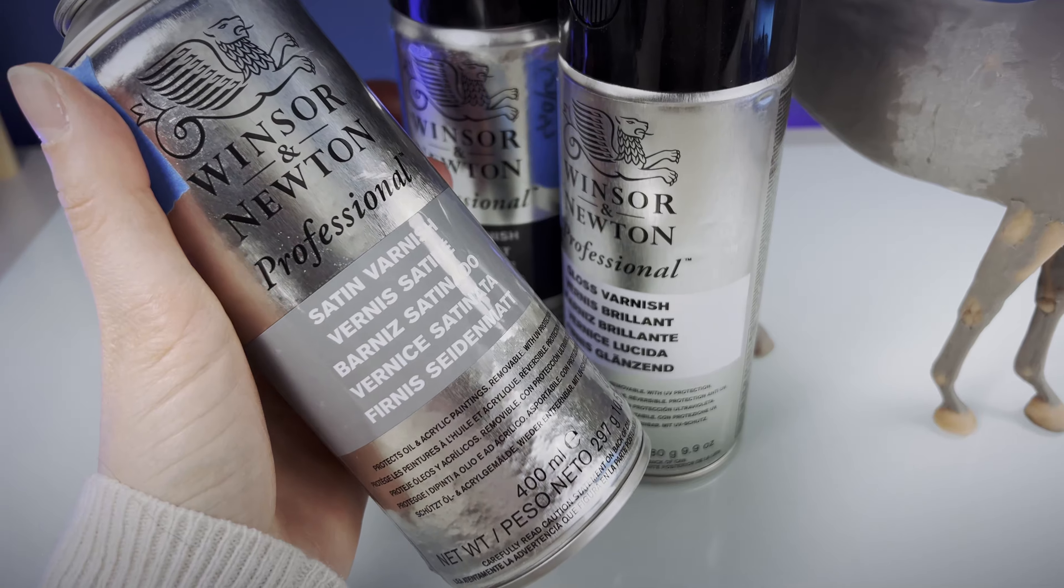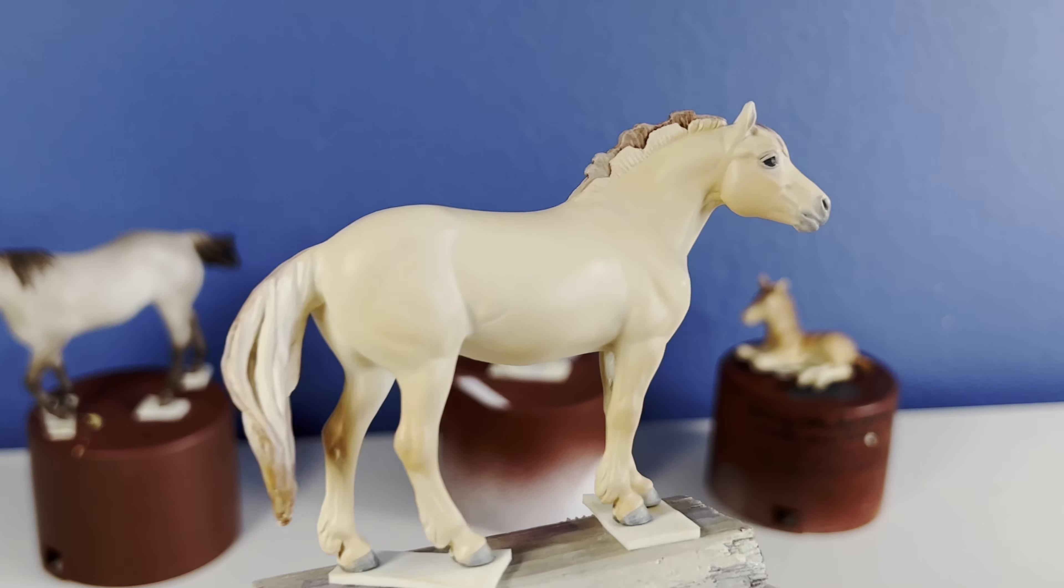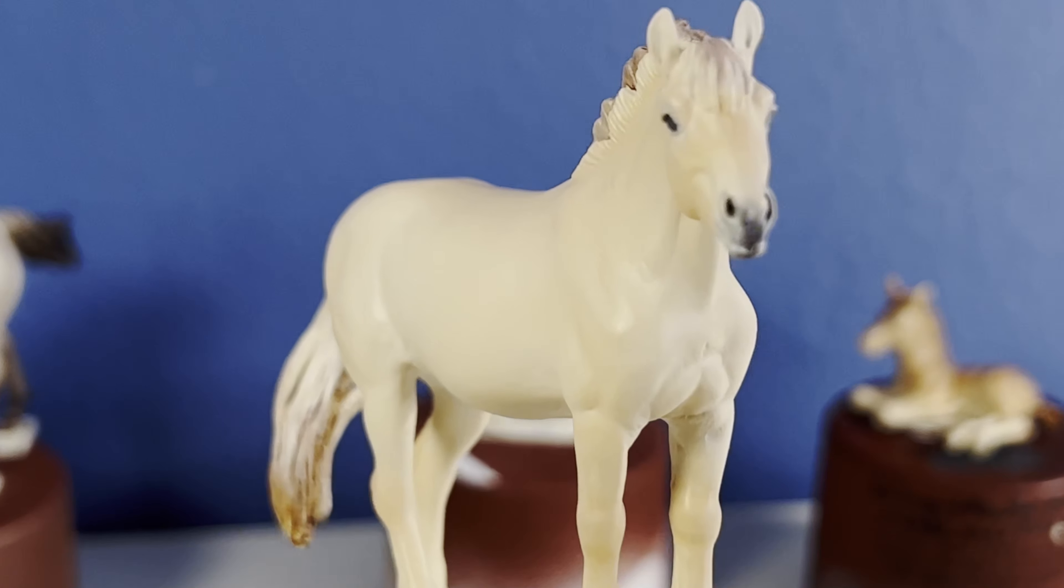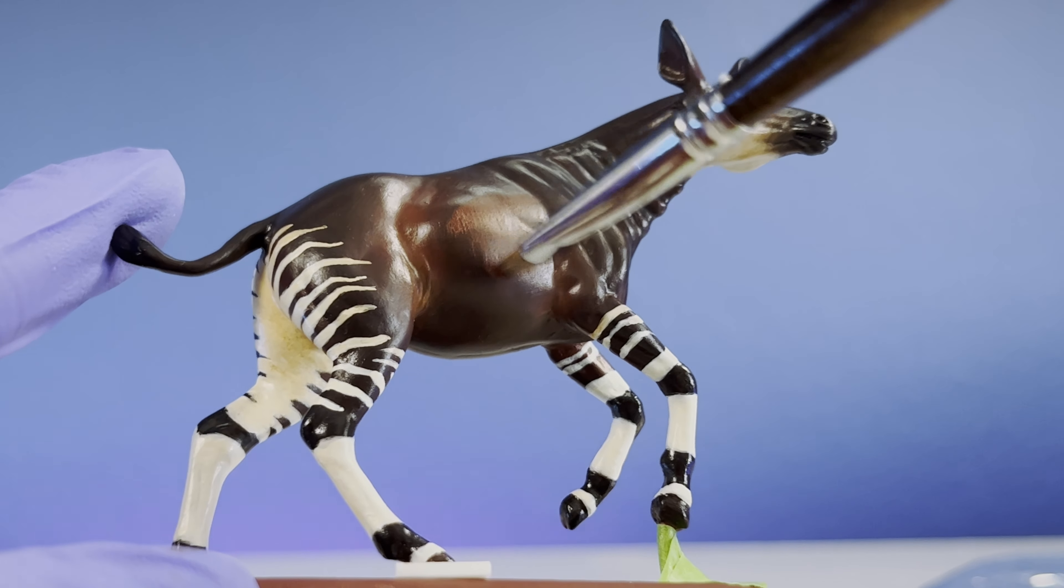After the paint has cured, you can apply a top coat sealer or a varnish to seal and protect the paint for years to come and to give it a matte, satin, or glossy finish. If you want to see more about painting Milliput, you can check out my Okapi project.